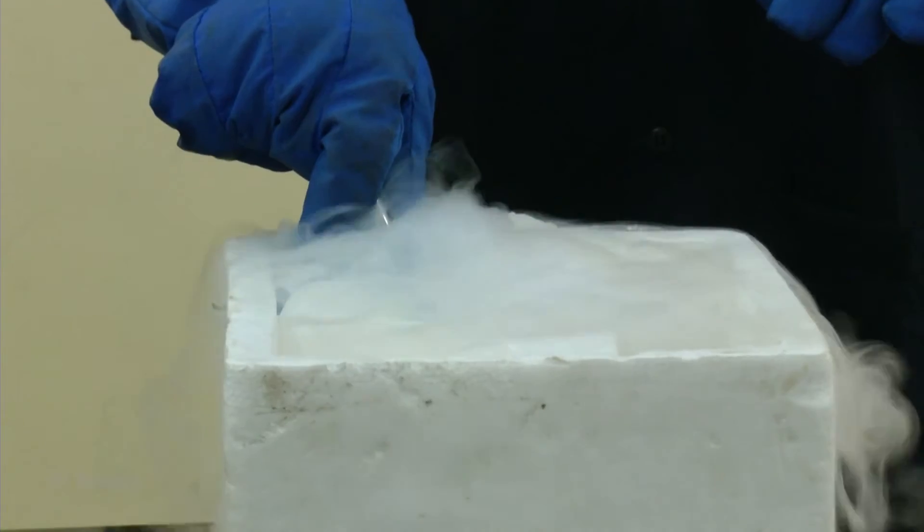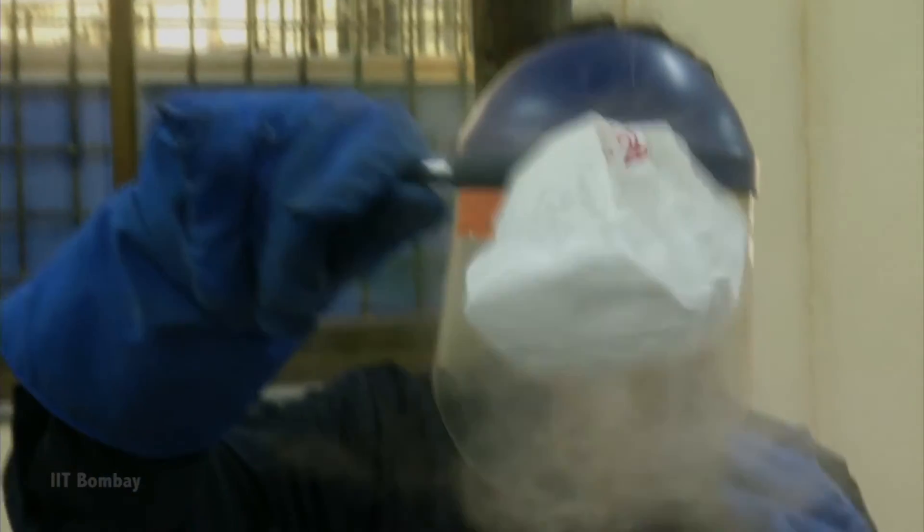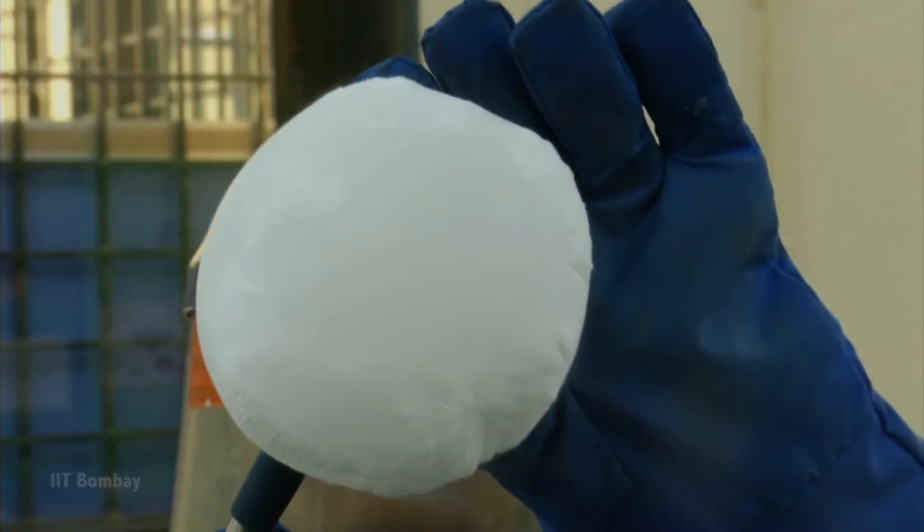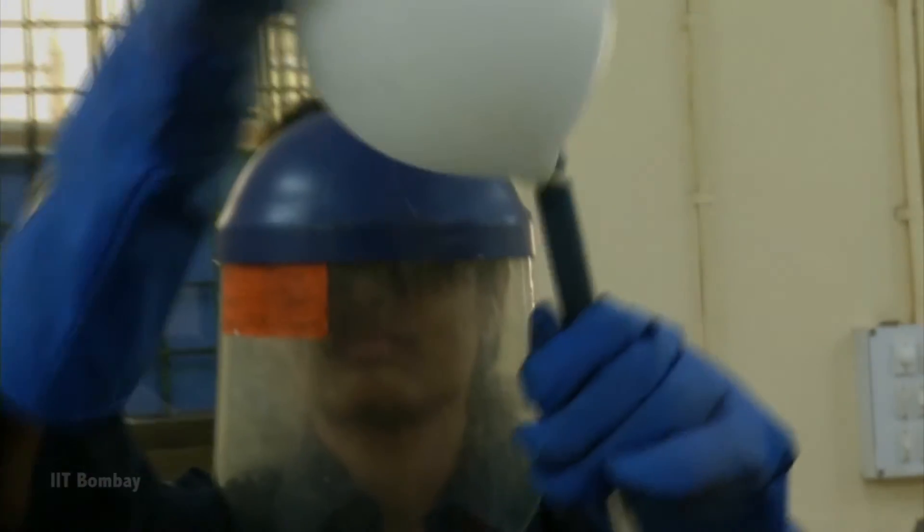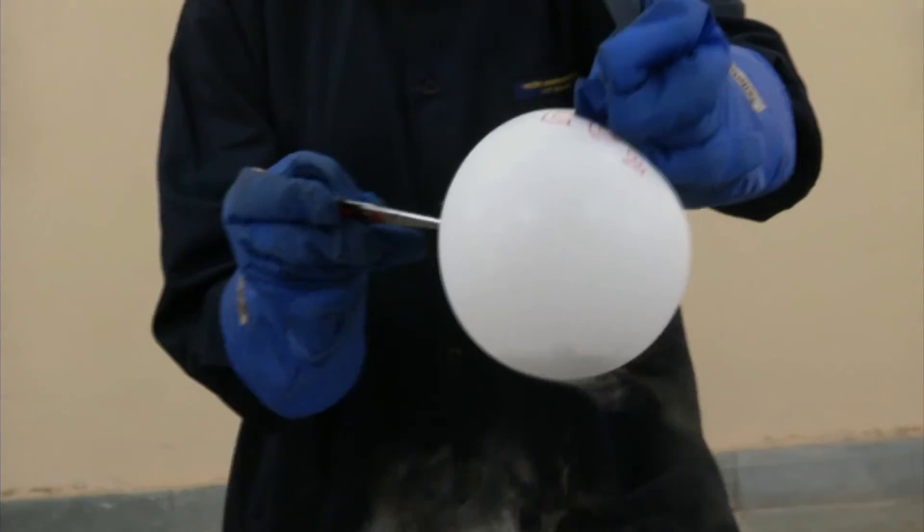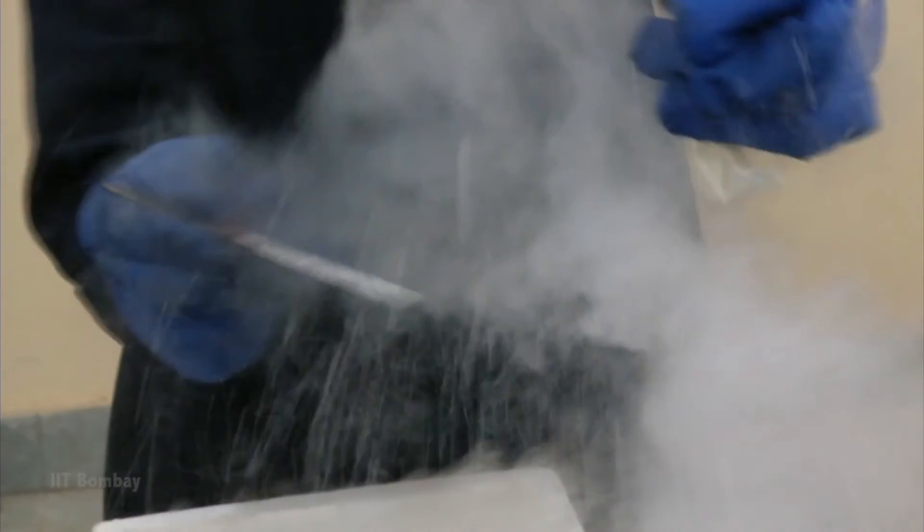And now you can see that balloon is getting shrunk. And what you see now is the CO2 gas has now become solid. What you see now is solidified CO2. You can see the solidified powder here of CO2. CO2 solidifies around minus 80 degrees centigrade, and now I can show you the solidified CO2 powder which you can see here.